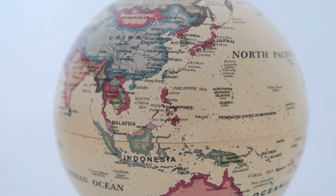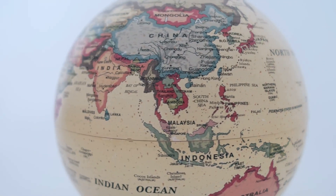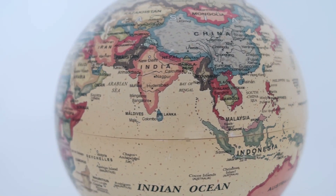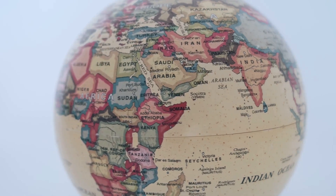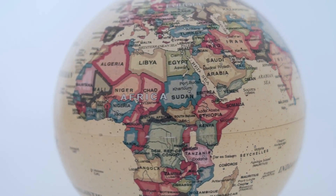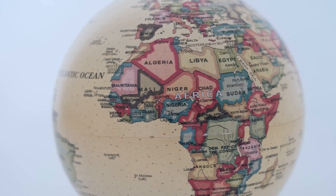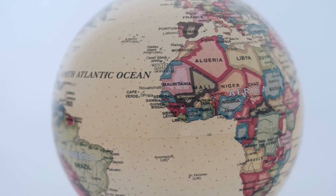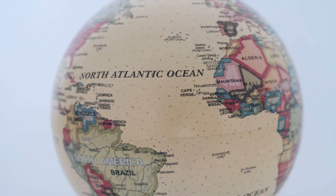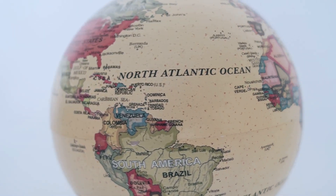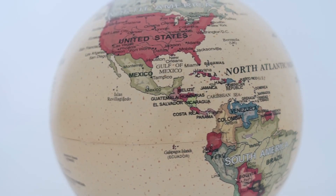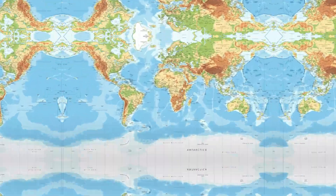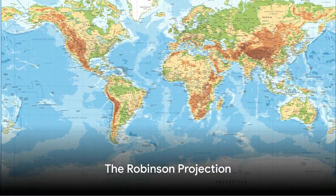Here, countries and continents can appear elongated or stretched, distorting our perception of their true shape. Thus, the Peters projection, while presenting a more accurate representation of country sizes, may distort their true shape.